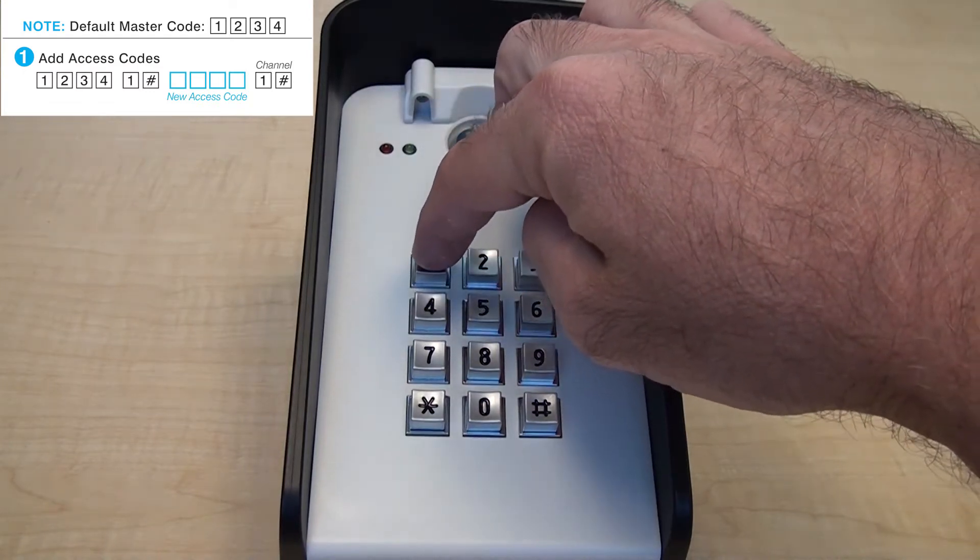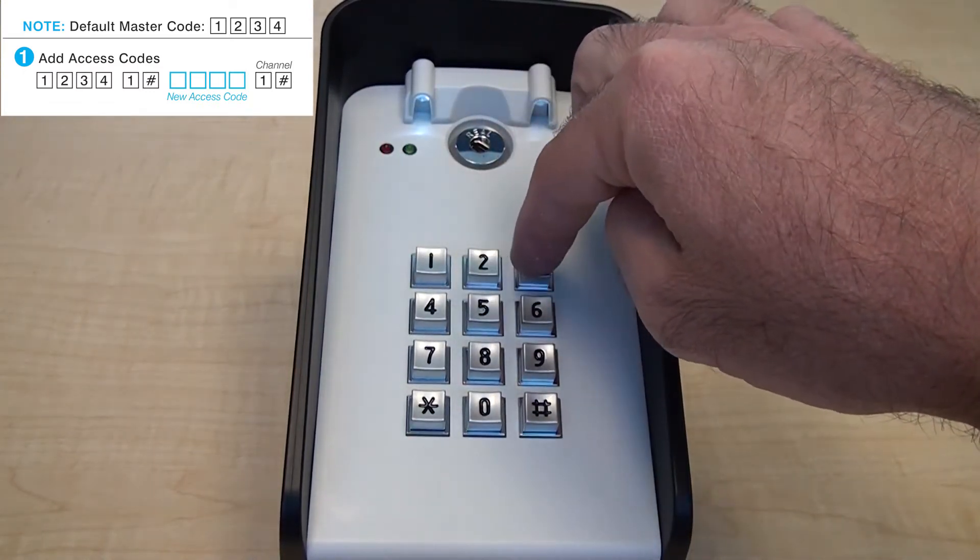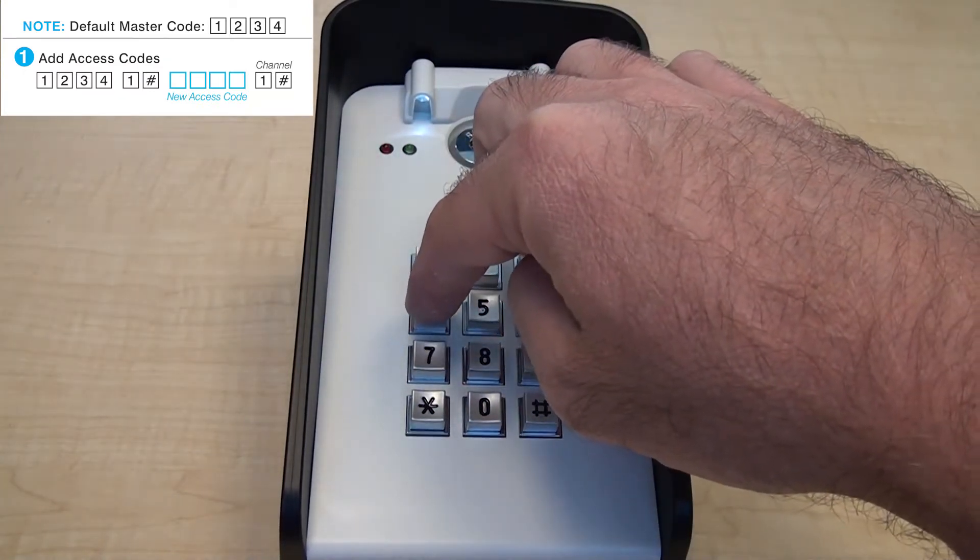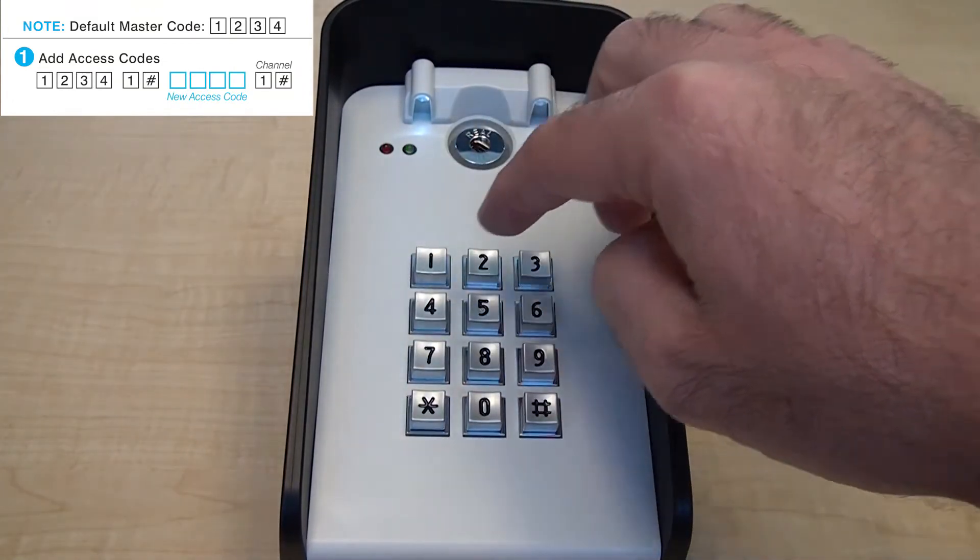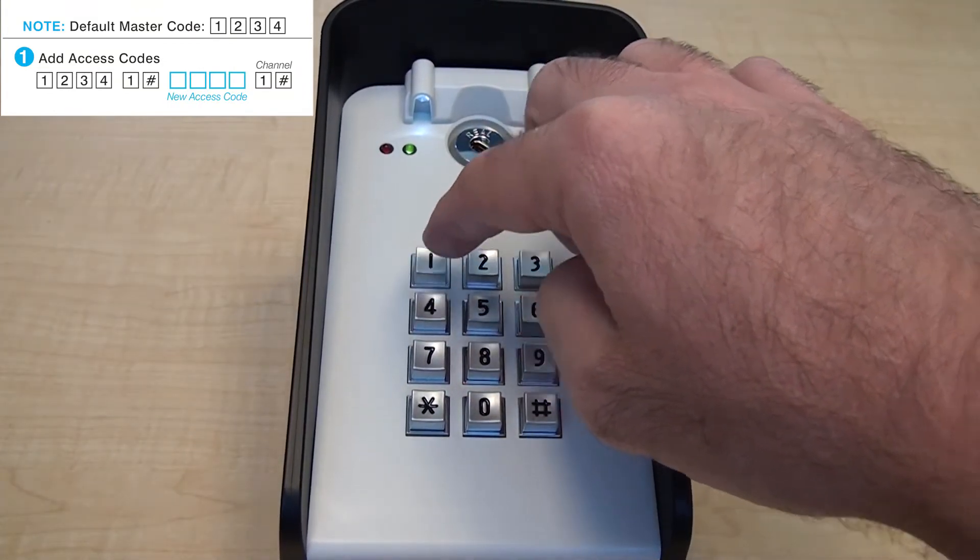To add new access codes, use the default master code of 1234 to enter programming mode. Press 1 pound to enter the add function of the keypad.